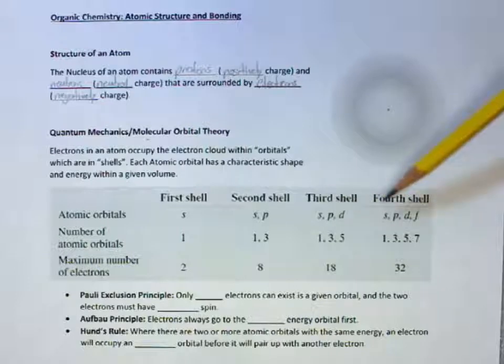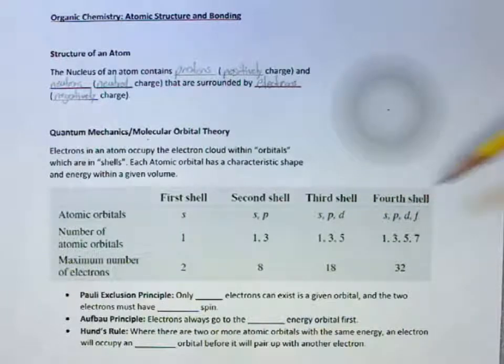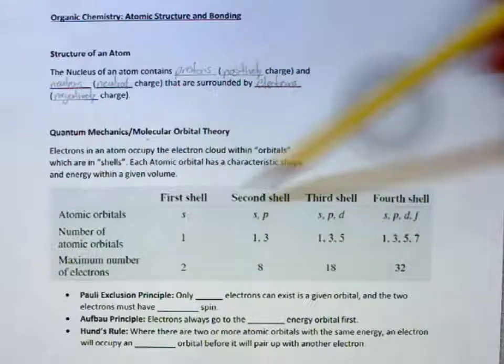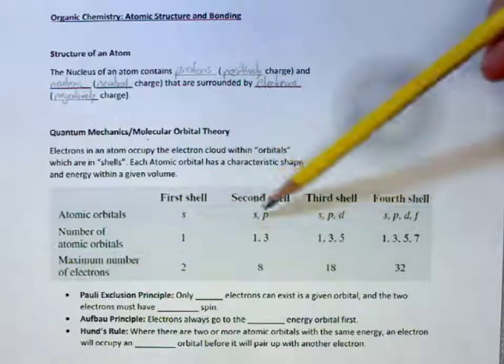In the third and fourth shell, we have D and also F atomic orbitals. For organic chemistry, we will be mostly focusing on the first and second shell.